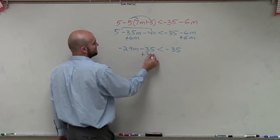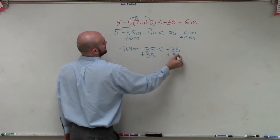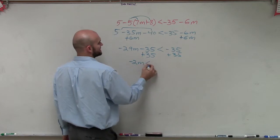Then, now to get my m by itself, I need to add 35. Therefore, I get negative 29m is less than 0.